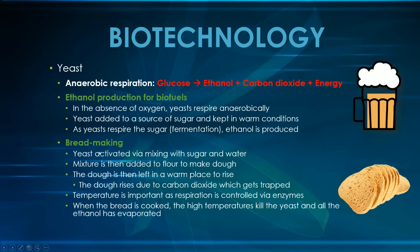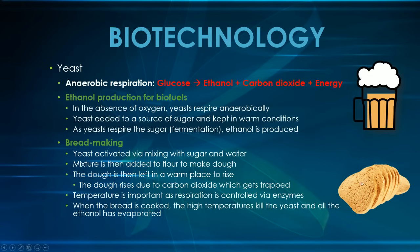In bread making, you basically activate the yeast by mixing it with sugar and water, and the mixture is then added to flour to make dough. The activated yeast will respire anaerobically, giving you carbon dioxide, which then becomes trapped in the dough, causing it to rise. Temperature is important because respiration is controlled by enzymes, so you need to maintain an optimum temperature. When the bread is fully cooked, the high temperatures kill all the yeast and evaporate the ethanol formed, leaving little holes in the bread as evidence of where the carbon dioxide was trapped.